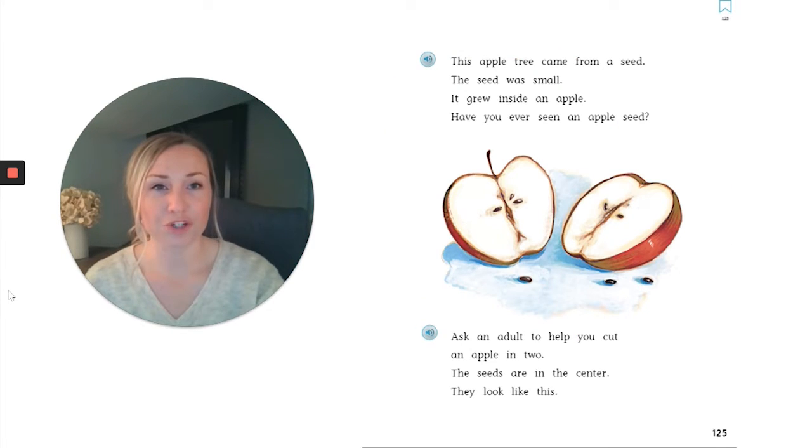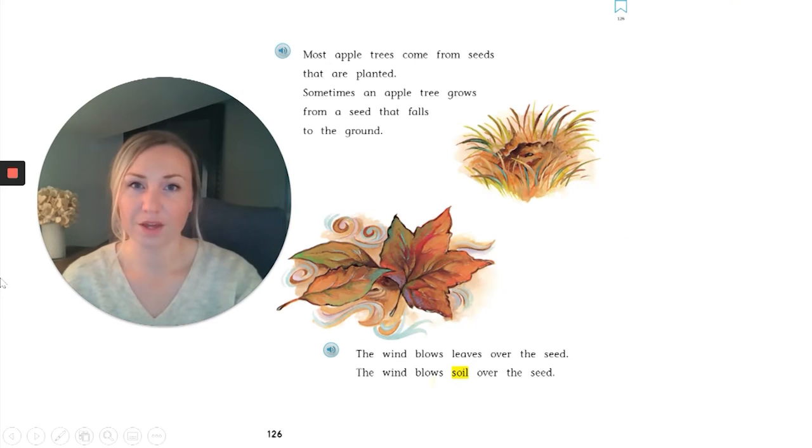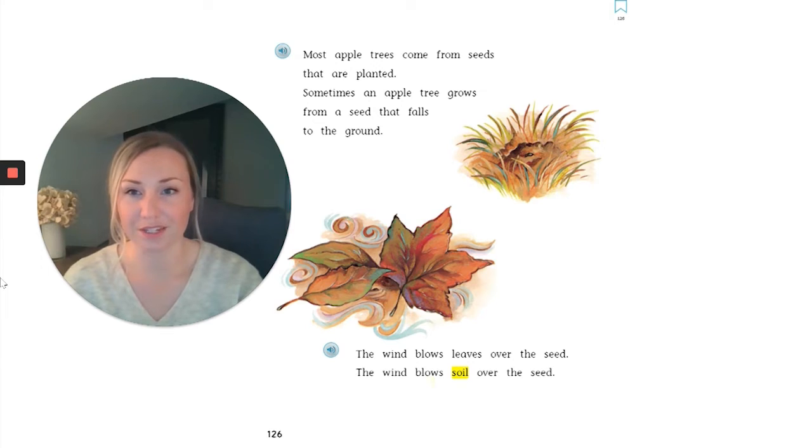This apple tree came from a seed. The seed was small. It grew inside an apple. Have you ever seen an apple seed? Ask an adult to help you cut an apple in two. The seeds are in the center. They look like this. Most apple trees come from seeds that are planted. Sometimes an apple tree grows from a seed that falls to the ground. The wind blows leaves over the seed. The wind blows soil over the seed.